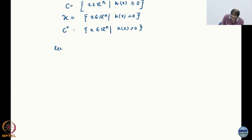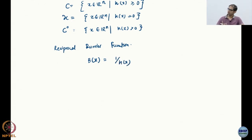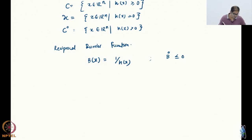The reciprocal barrier function — that is what we have just looked at — is basically something like B(x) equals 1 over h(x). This is how we have been using it: it is like 1 over 25 minus x1 squared, or 1 over 9 minus x2 squared. This is how we have been doing it.